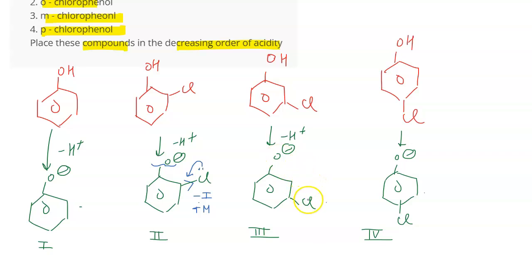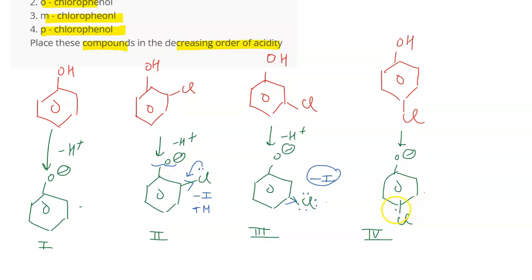In the third compound, we have chlorine at the meta position. The chloro group here shows only a minus I effect and no plus M effect. It does have lone pairs of electrons to donate, but those lone pairs are not involved in resonance, so it shows only the electron withdrawing effect. In the fourth compound, chlorine is at the para position, and it shows both a minus I effect and a plus M effect because the lone pairs are involved in conjugation and resonance.